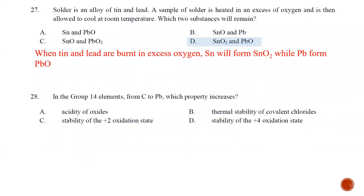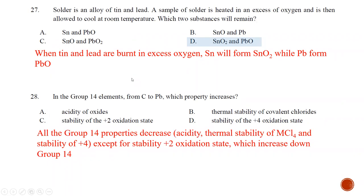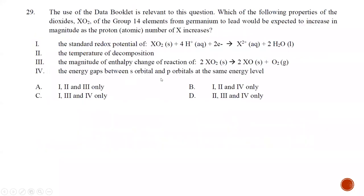Question number twenty-eight: in Group 14 elements from carbon to lead, which property increases? Acidity of the oxide decreases. Thermal stability of the covalent chloride decreases. Stability of the plus two oxidation state increases. Stability of the plus four oxidation state decreases. The best answer is the stability of the plus two oxidation state, which is C.